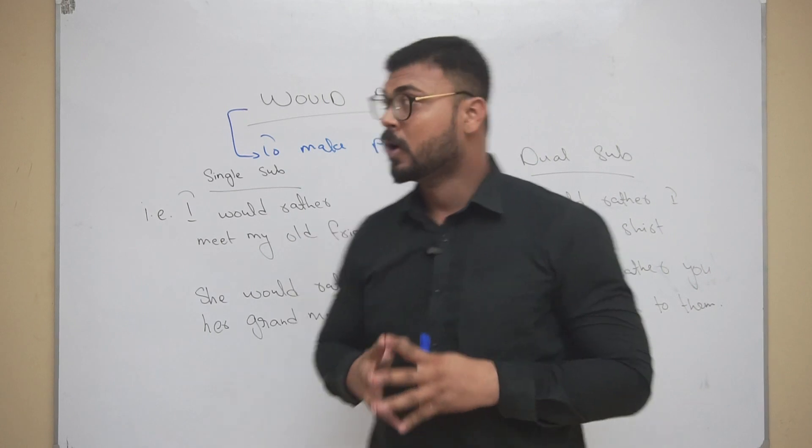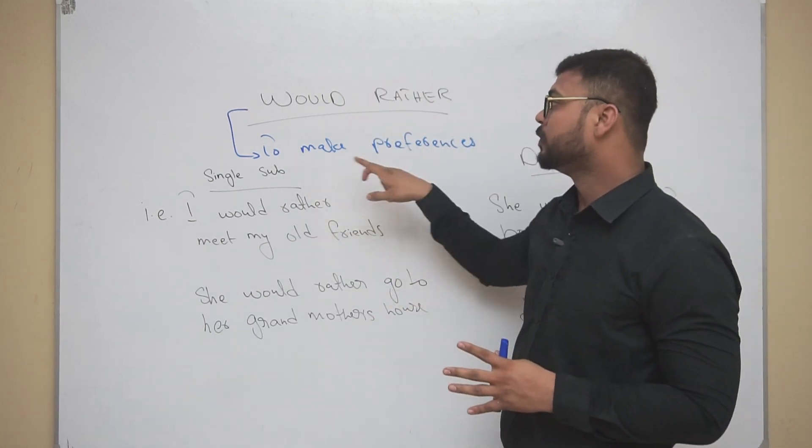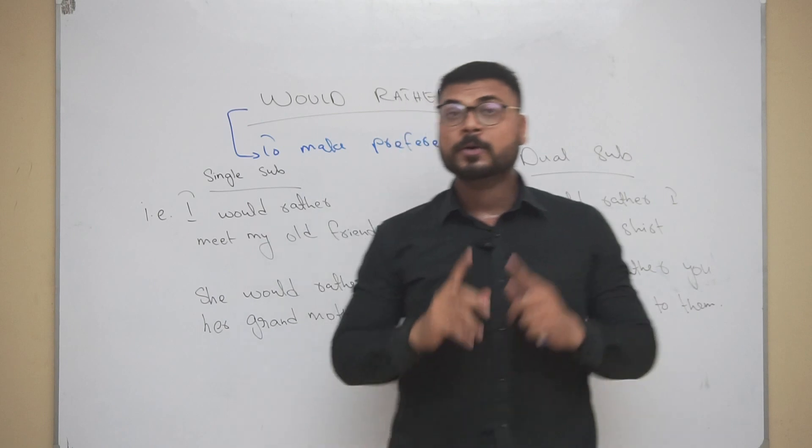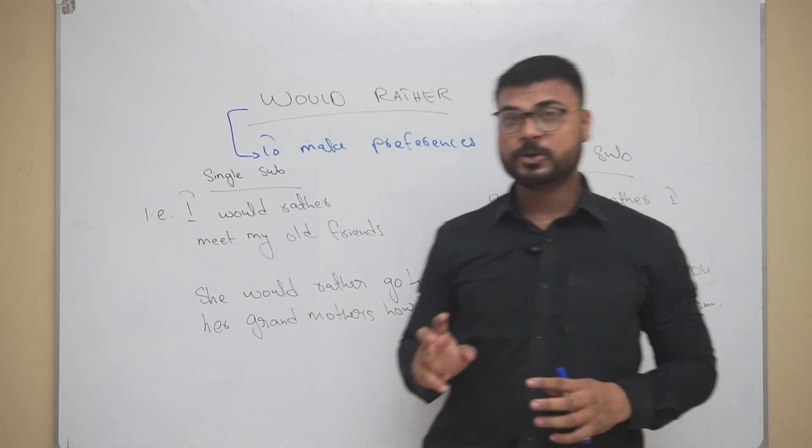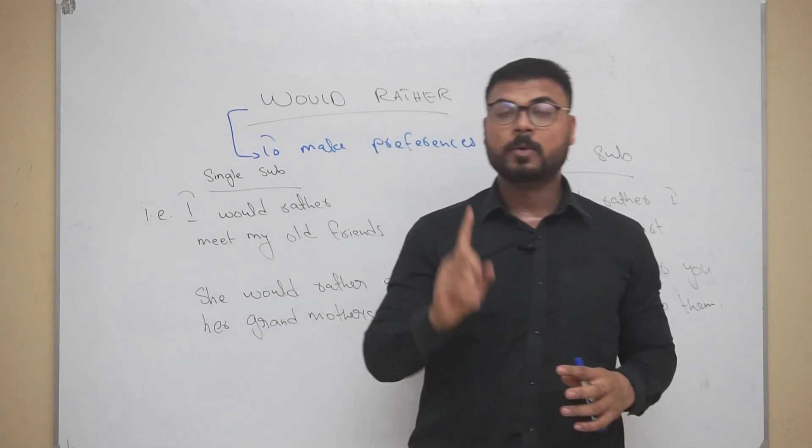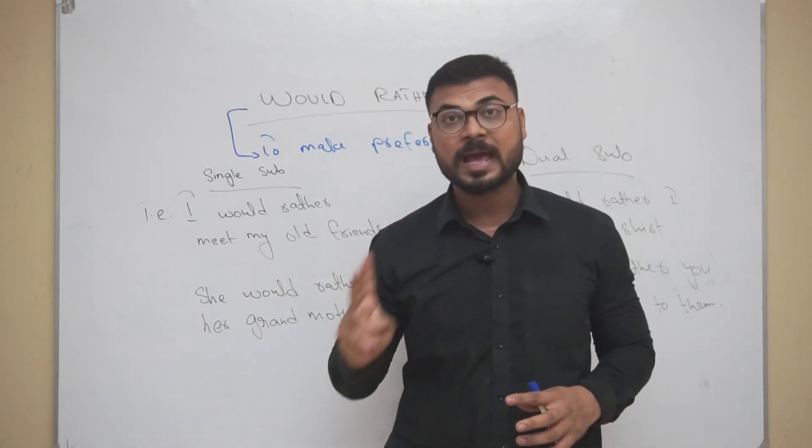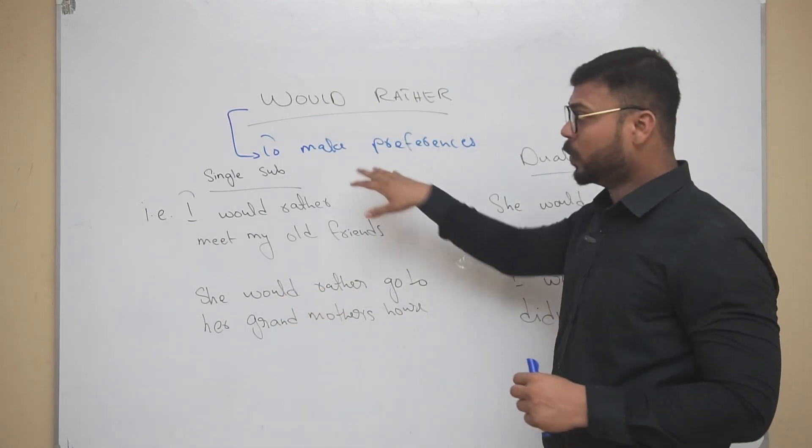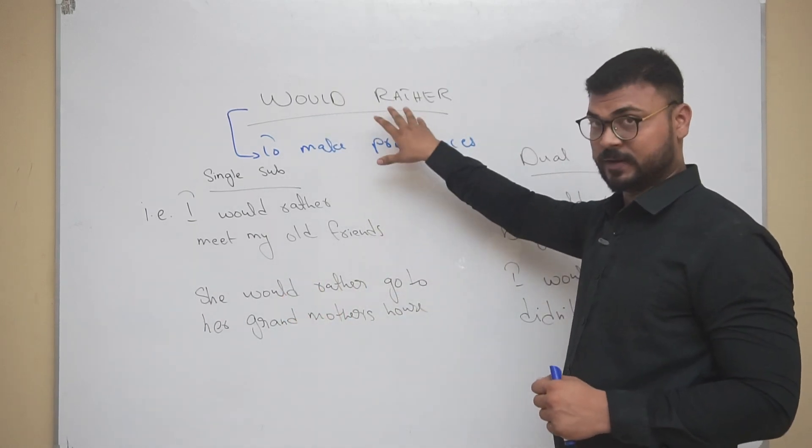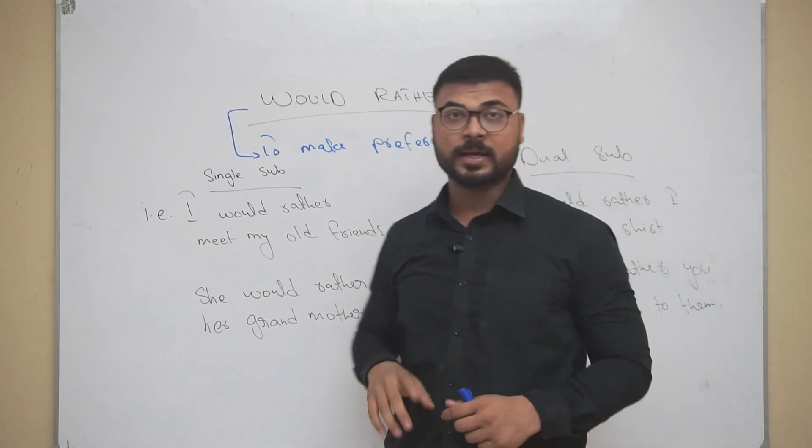This time, would rather - we use it to make preferences. Right now we are learning it to make preferences in present. Remember, it can be used in two different ways: number one is present, number two is past. So to make preferences in present, we are learning would rather with present.